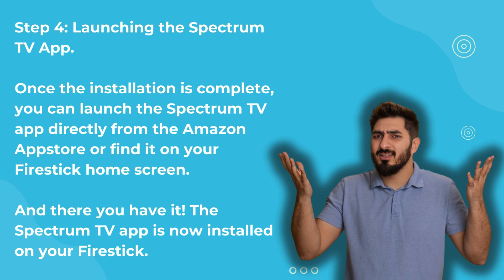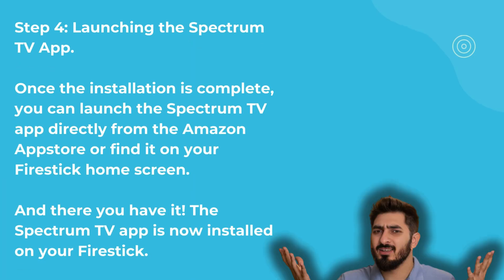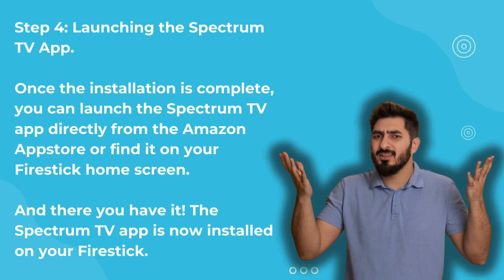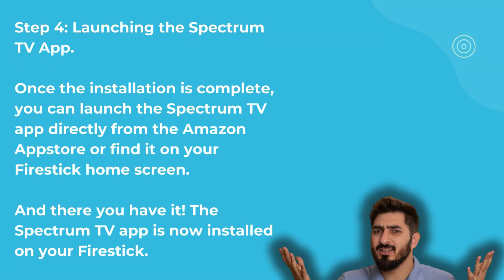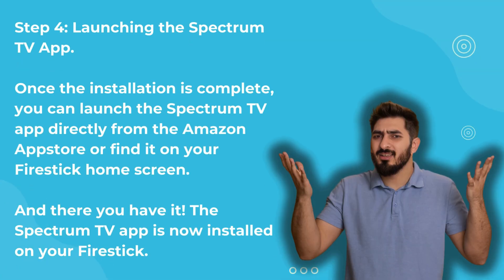Step 4: Launching the Spectrum TV app. Once the installation is complete, you can launch the Spectrum TV app directly from the Amazon App Store or find it on your Fire Stick home screen. And there you have it — the Spectrum TV app is now installed on your Fire Stick.